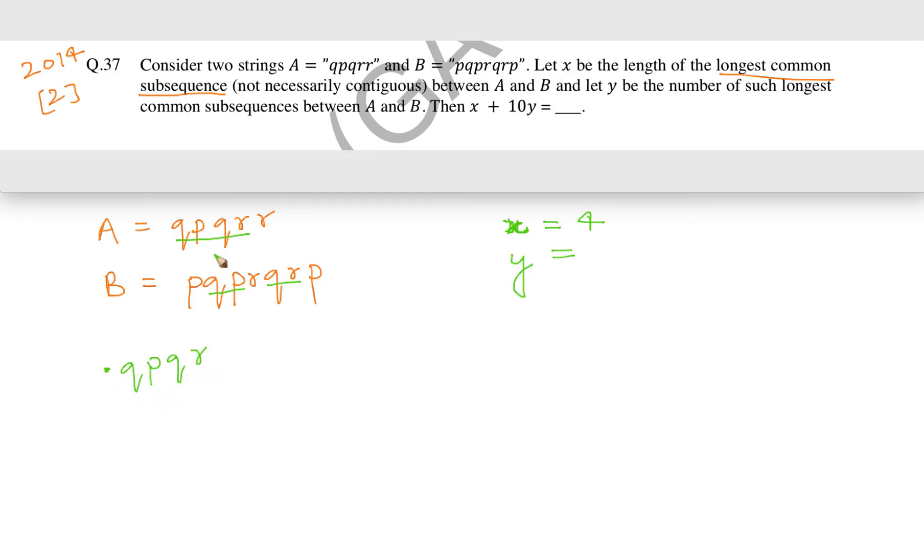What about other ones? Let us talk about QPRR. If we are taking Q, P, and R, R, then we can see that Q, P is possible, and then R and R is also possible. So we can see that QPRR is possible.